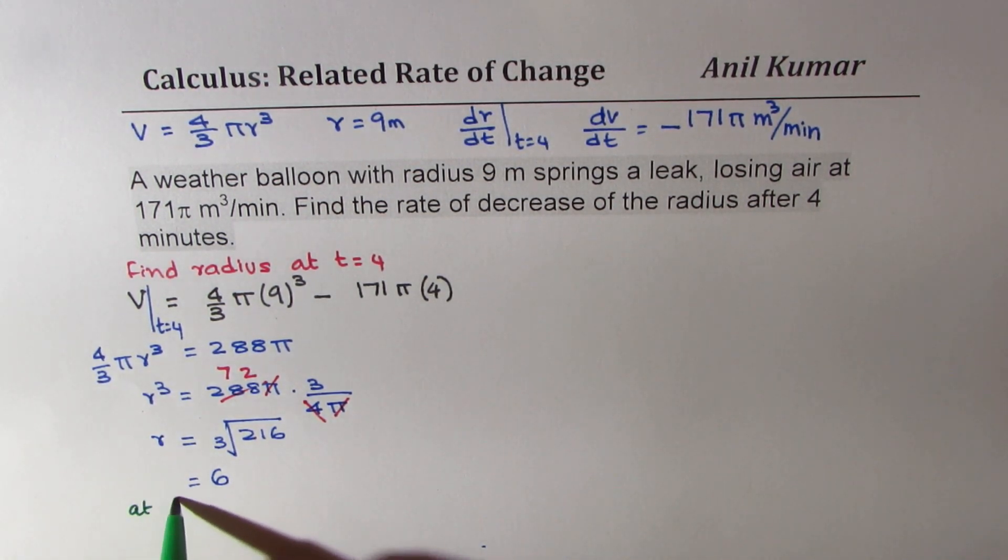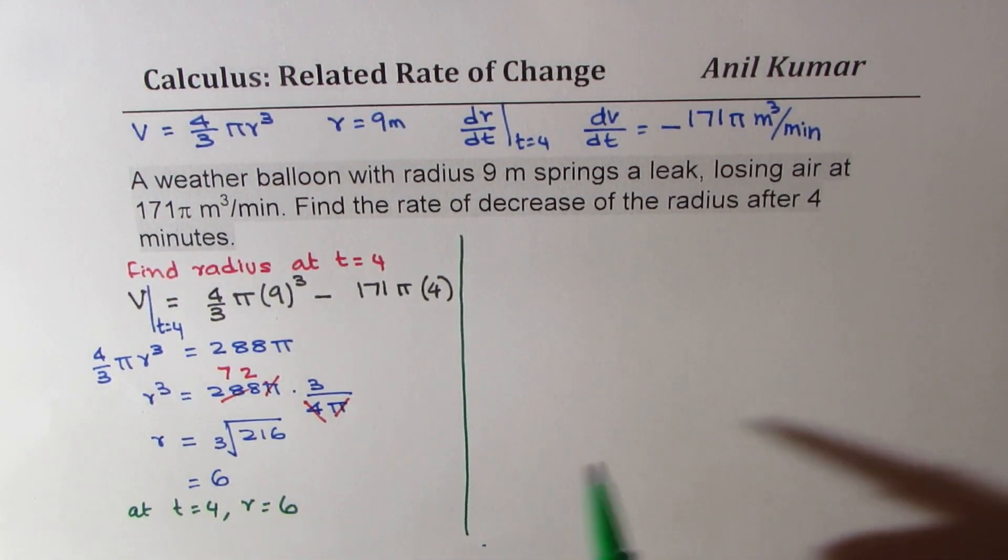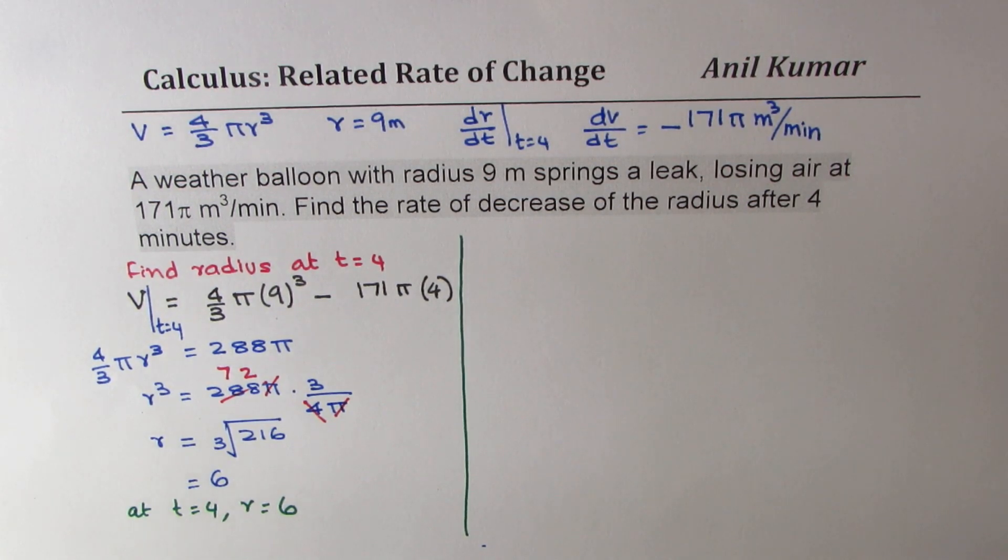So the radius is 6 when t is 4. So what we found here is that at t = 4, radius = 6. This is extremely important to consider. And now let's see the rate of change at this instance of time.